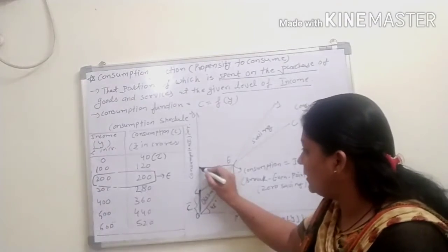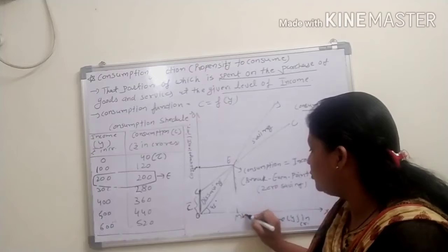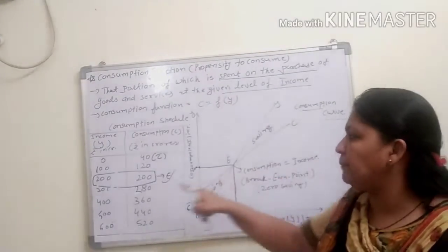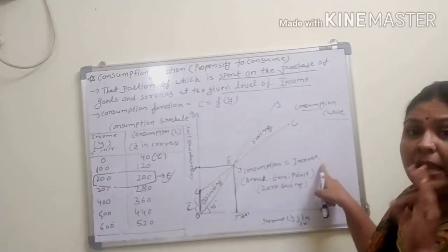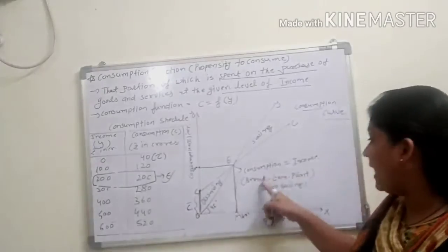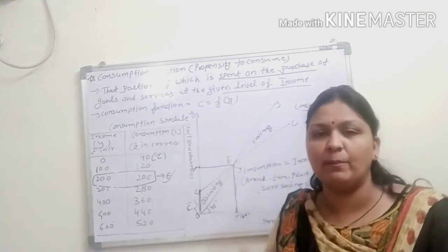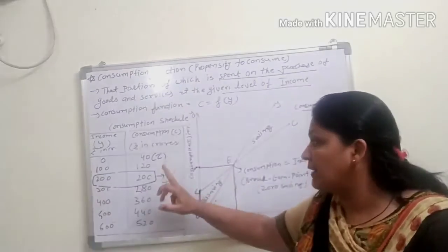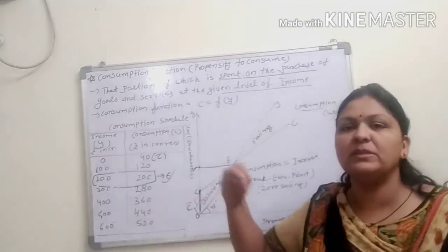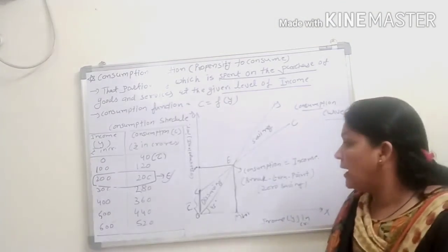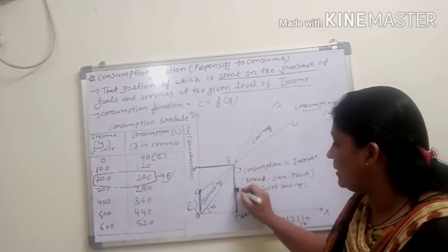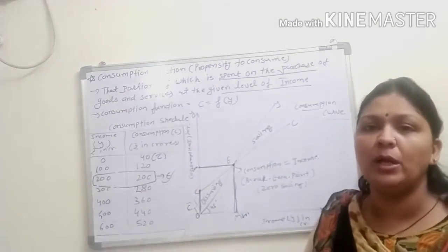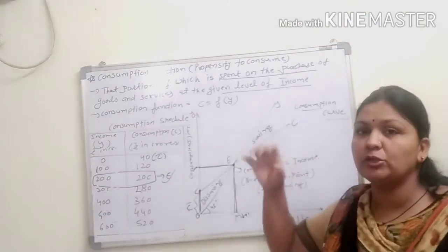Point E is the break-even point where consumption equals national income — also called the zero saving point. Before this point is dis-saving; at this point, saving is zero; and after this point, some money is saved by the consumer. So before E is dis-saving, at E is zero saving, and after E is the saving area.